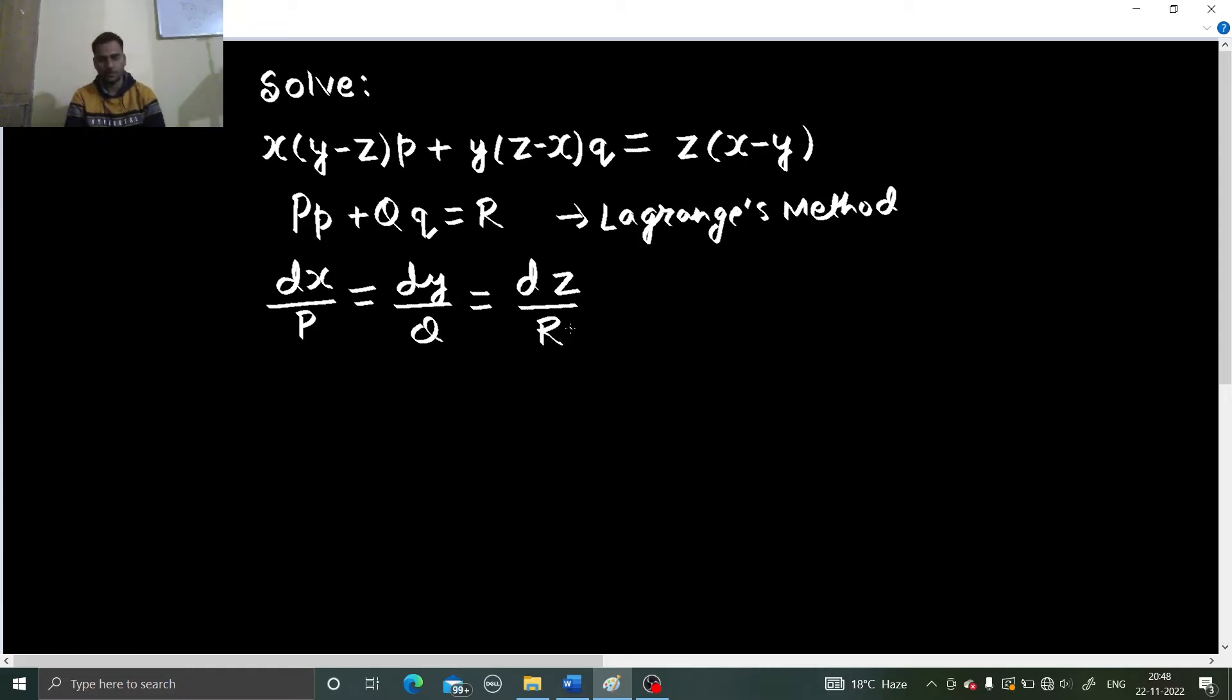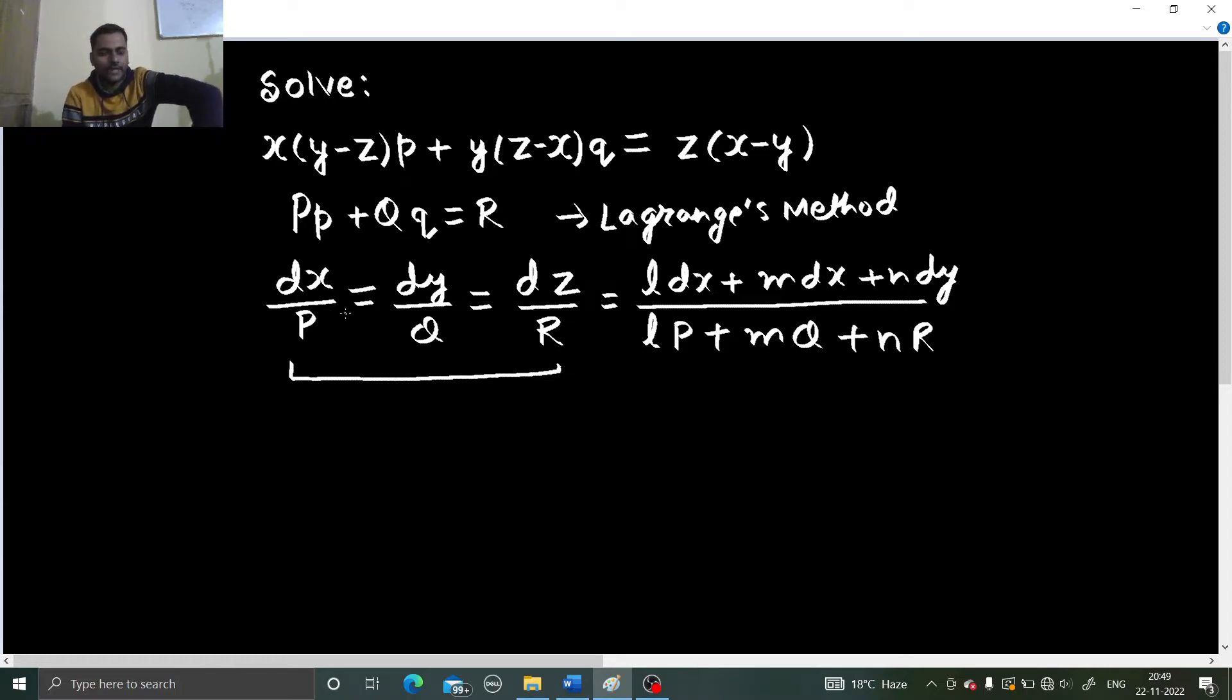If that is sufficient, go with that. Otherwise, the extension of this is Lagrange's method of multipliers, which says choose such values of l, m and n so that the denominator, which is l p plus m q plus n r, this denominator becomes 0. That means on multiplying p, q and r with l, m and n and then adding them, you somehow get 0. Because if you get 0 and equate it to any of this, you will get an equation. Finding equations is our goal. So if we are not able to find an equation just by integrating these, this is one other option for us.